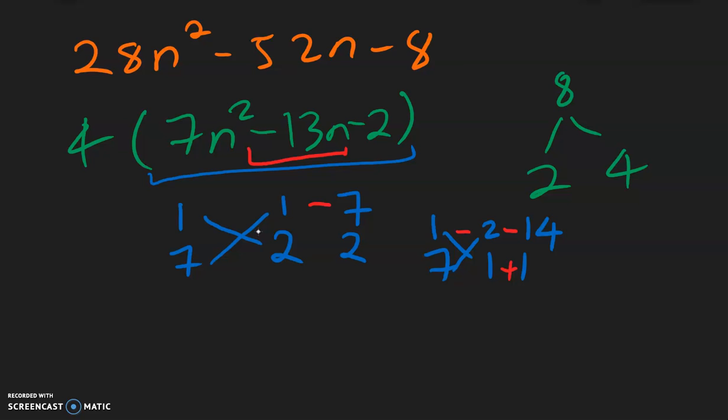And now copy the signs over and double check. A negative 2 multiplied with a positive 1 is a negative 2. So that means our factors from this part can be n minus 2 and 7n plus 1. And the only thing we need to do is remember to bring down this 4 in the front. So that is our answer.